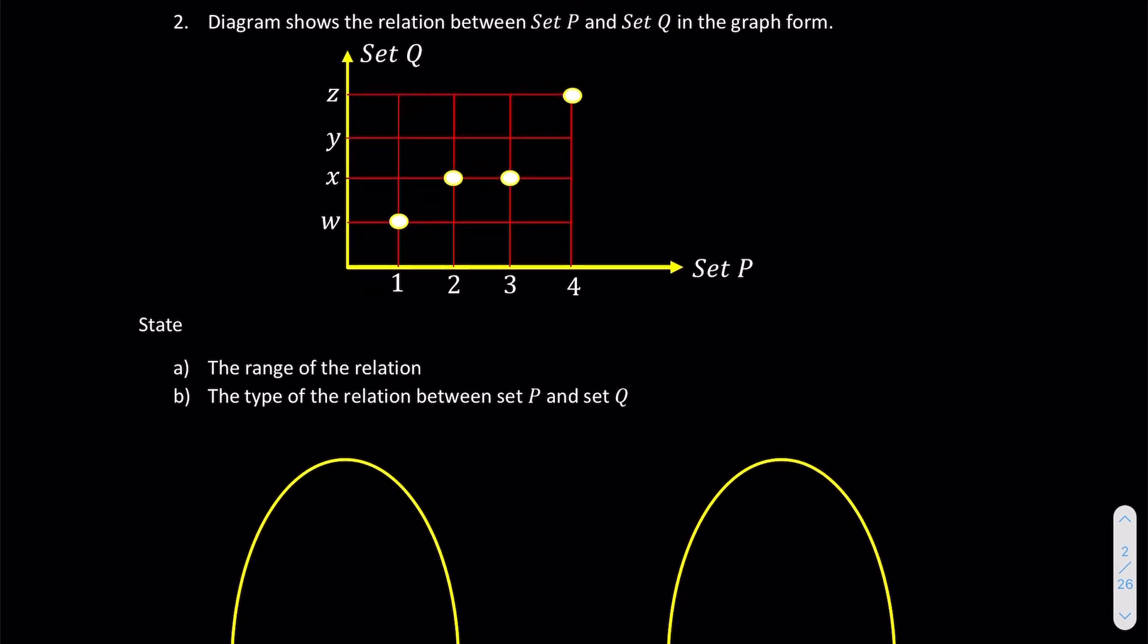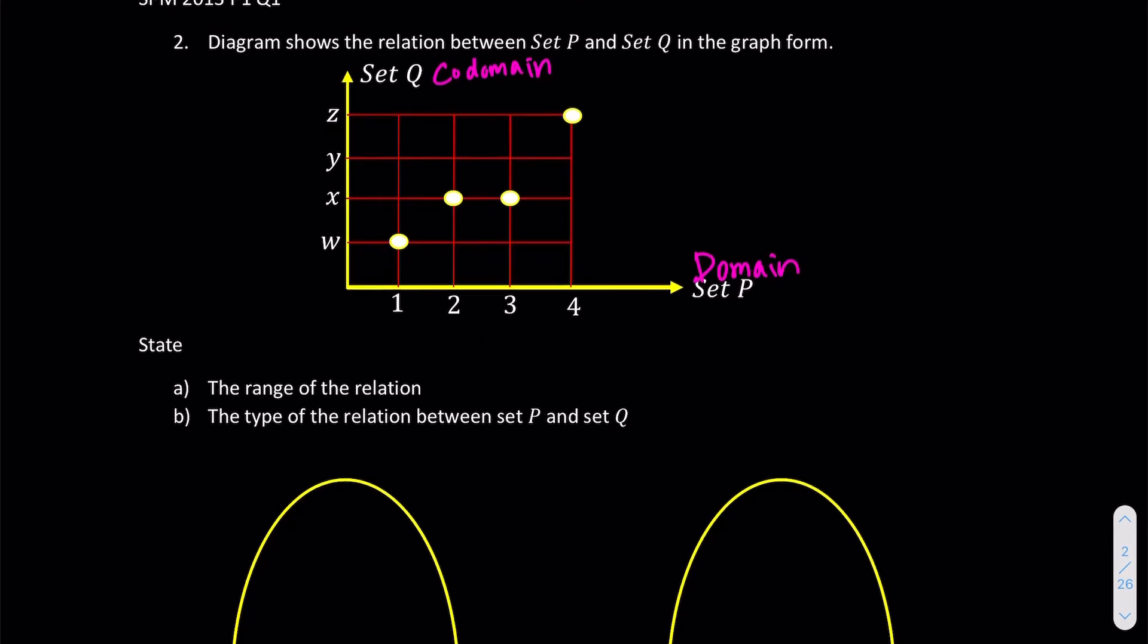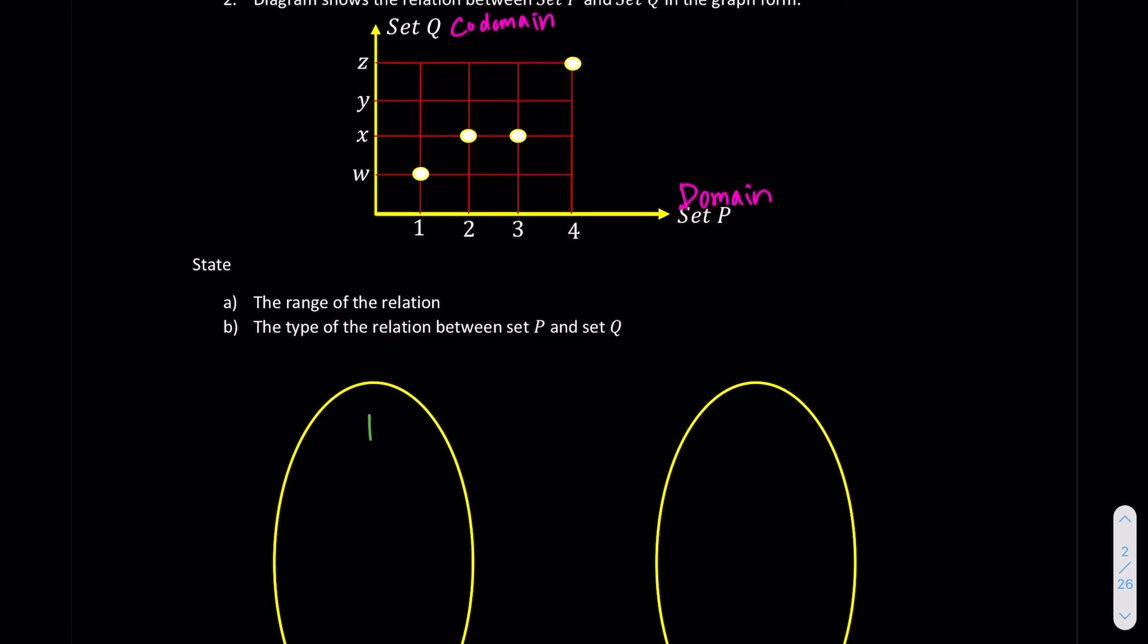So let's go for question number 2 now. The diagram shows the relation between set P and set Q in the graph form. So just remember that most of the time, our x-axis is eventually our domain, and our y-axis most of the time is our co-domain. We're going to translate this graph to something that we are more familiar first. So we try to plug in all of our domain, which is our x-axis, into the arrow diagram. So we have 1, 2, 3, and 4.